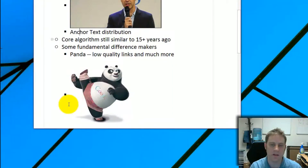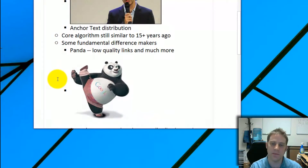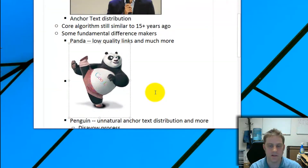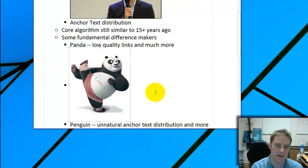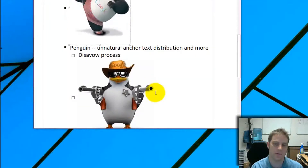Panda came first — I believe around 2010 or 2011 — and it enabled Google to analyze things on a whole other level, becoming much more efficient at applying algorithmic penalties. There are many ways Panda can hit you: it's not just about low quality links or content; site speed is a factor too, along with a whole bunch of other things.